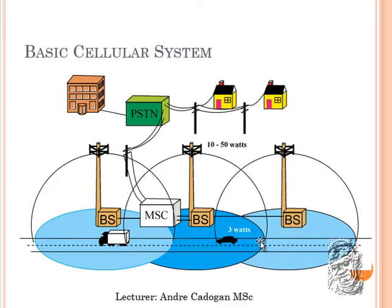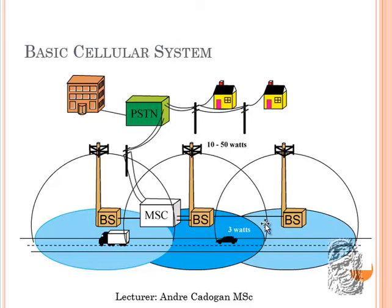These two cells are different colors — they cannot be the same. It has to be green, yellow, and green, or blue, yellow, and blue. If two colors that are the same are interconnected, they cause what you call electromagnetic interference.